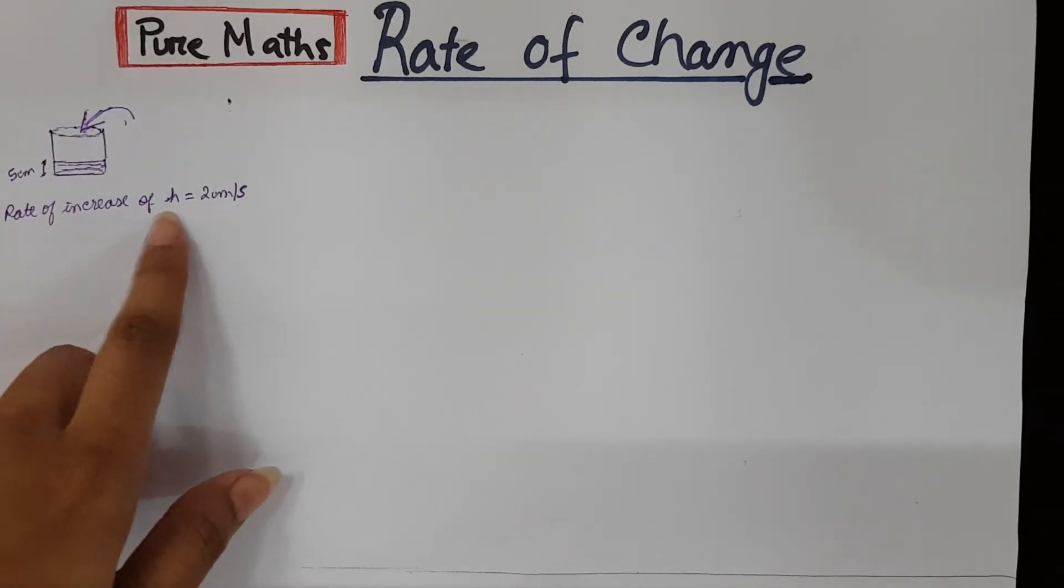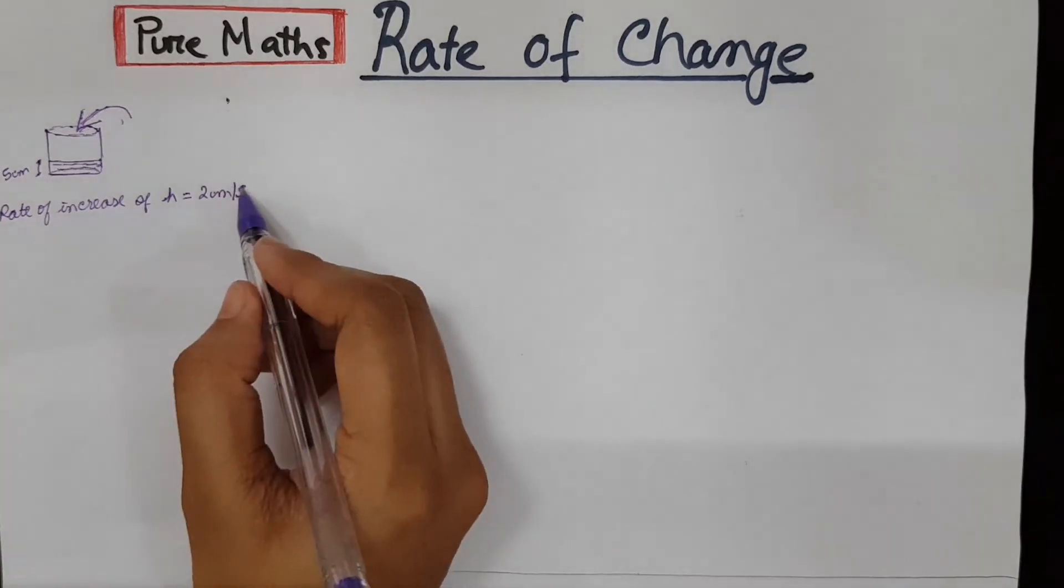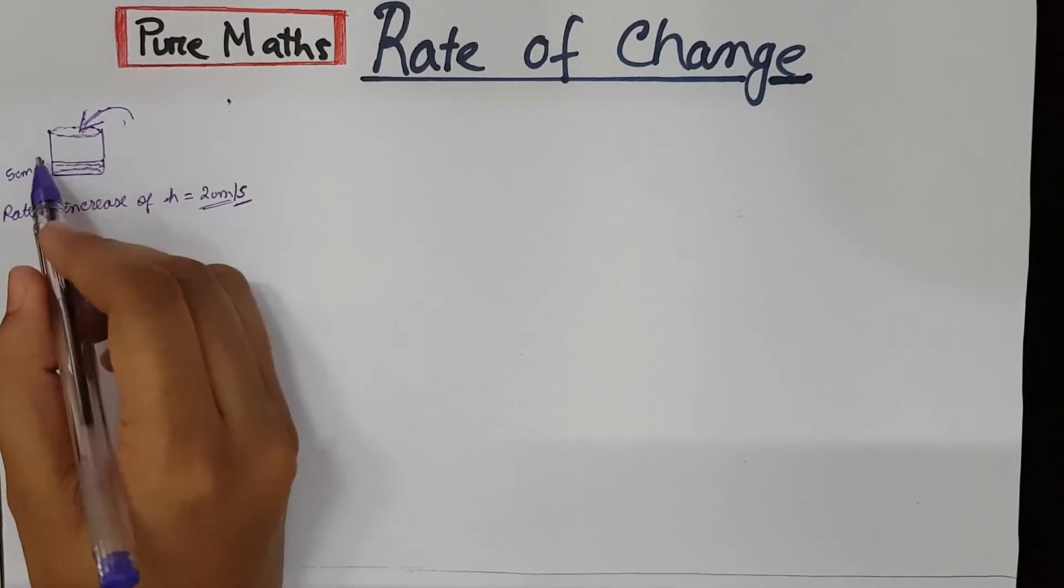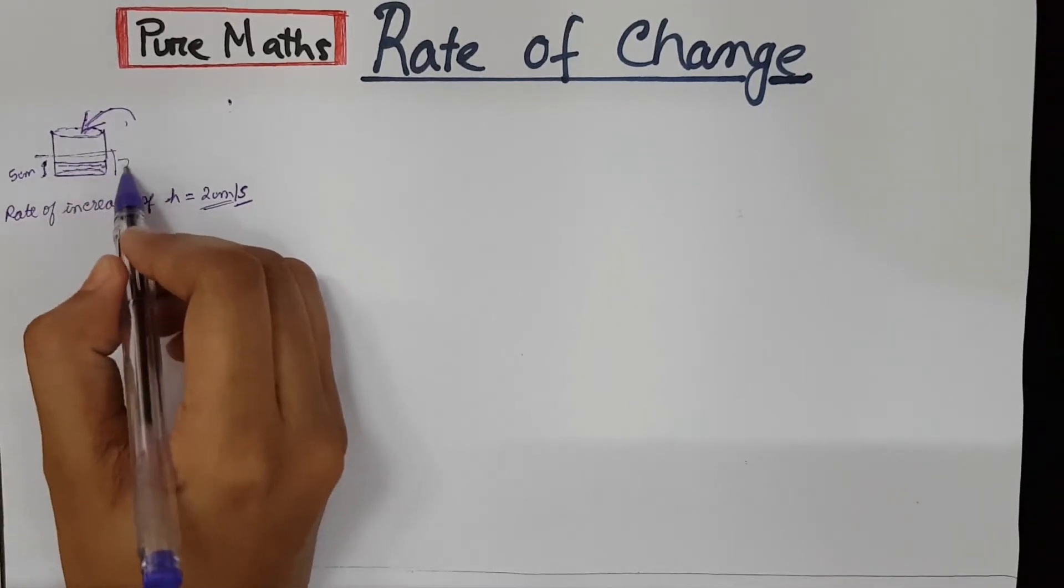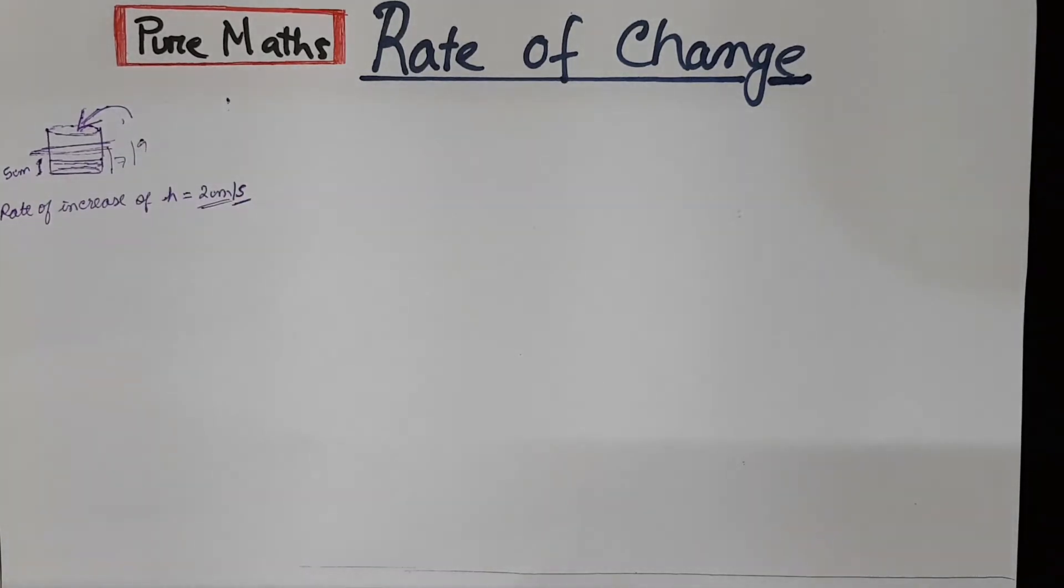So if I say the rate of increase of water is 2 cm per second, it means with every second the water will increase by 2. So after 1 second the water level will be 7 and then 9. So rate of increase just basically gives you the amount by which the height will increase every second.